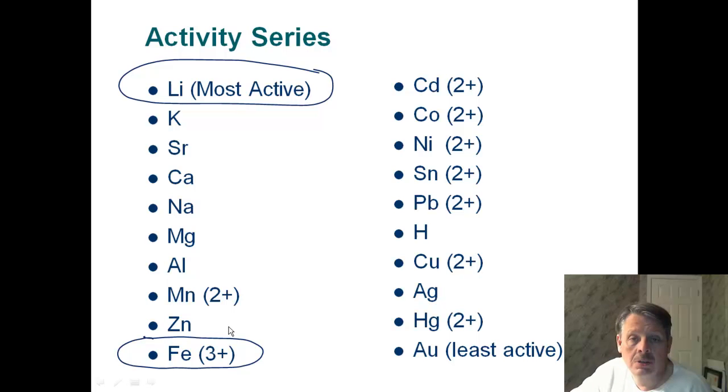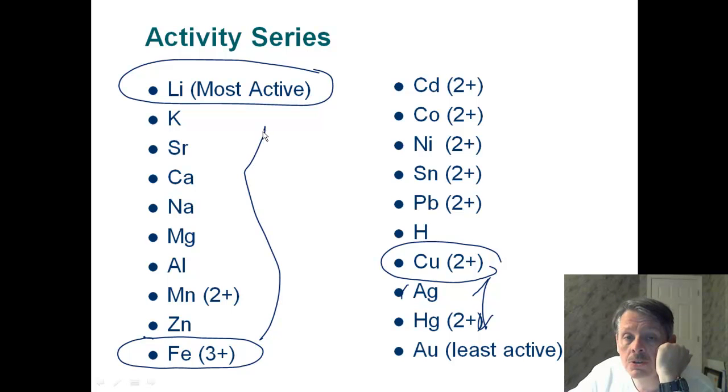Iron is iron, so we're just doing the most common charge, right? And I'm sorry, we said iron and copper. So let's look at iron and copper. Well, iron is far higher on the activity series than copper is. Copper is very close to the least active, and iron is much closer to the most active.